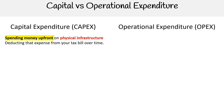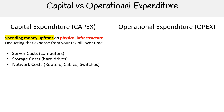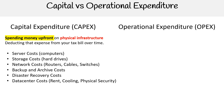Let's talk about some of the things that would be considered a capital expense. It's anything that's physical and you're buying it with money up front: computers for your server cost, hard drives for storage costs, routers, cables or switches for your network, purchasing things for backup and archive costs, and disaster recovery like an uninterruptible power supply.